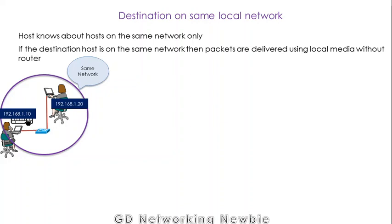The operating system in host machines knows about other hosts on the same local area network. If these two computers are on the same network, they both know about each other. If the destination host is on the same network, packets are delivered using local media and we don't need any router. If users are connected within the same LAN, they can exchange information using local media such as fiber optics or Ethernet. If the destination is on the same LAN, there is no need for routing.